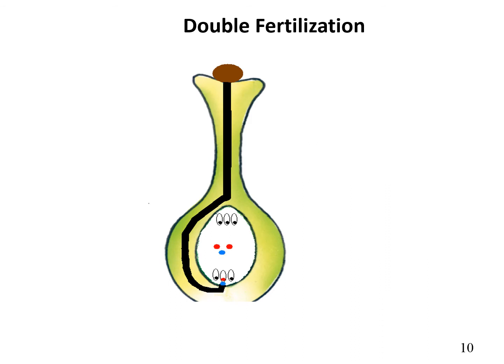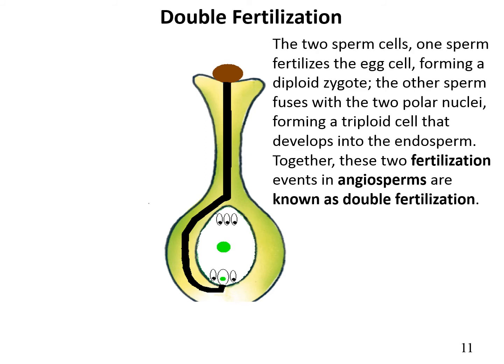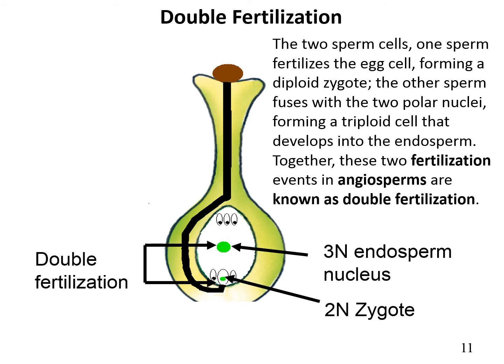As we know, the generative nucleus forms 2 male gametes, meaning 2 sperm. One male gamete fuses with the egg nucleus to form the diploid zygote, and the other sperm fuses with the 2 polar nuclei to form the triploid endosperm nucleus. Together, these two fertilization events in angiosperms are known as double fertilization.